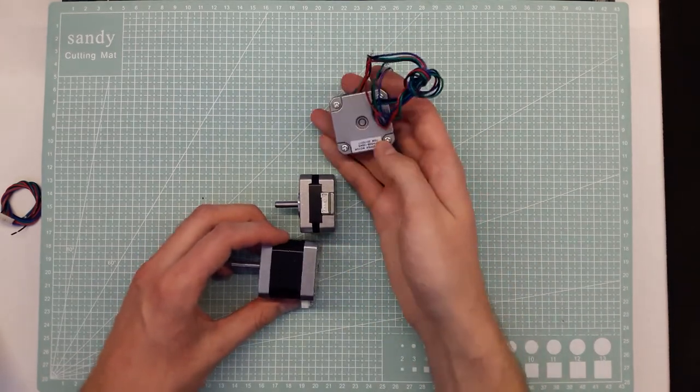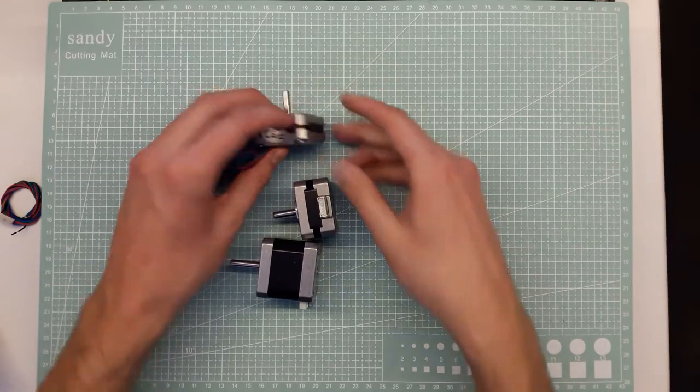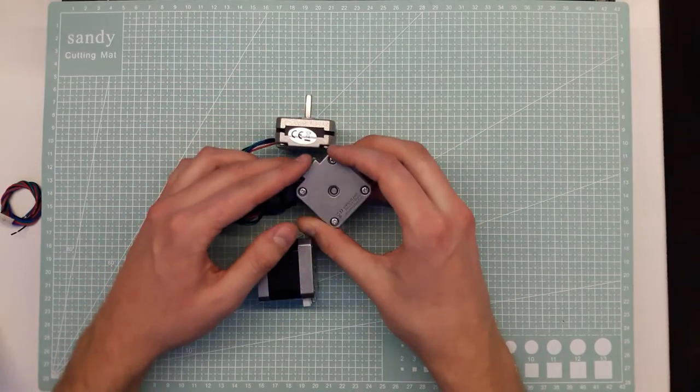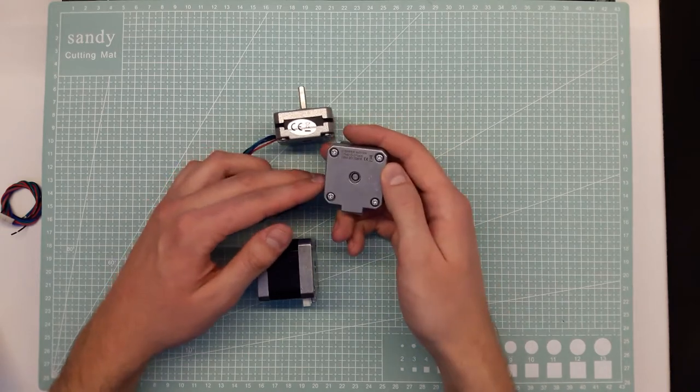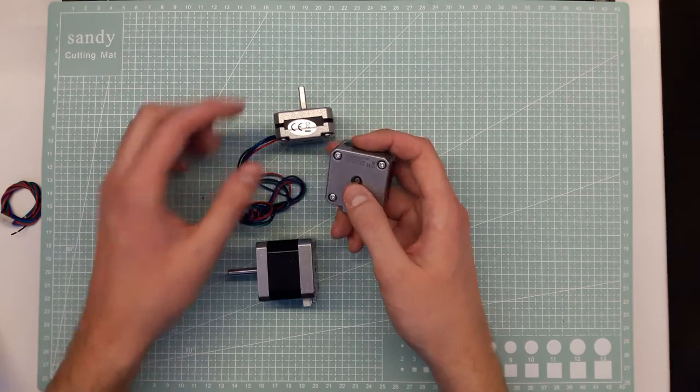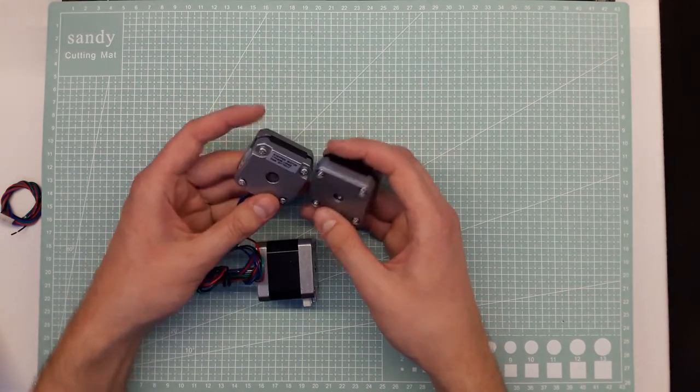These guys though are, I believe this one with the wires attached is about 1 amp and this one is 0.7. This one should have 18 newton centimeters, but this one has 13 newton centimeters of torque.